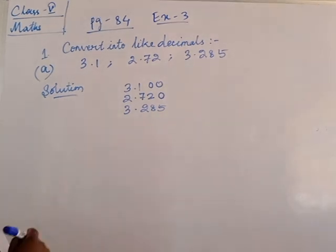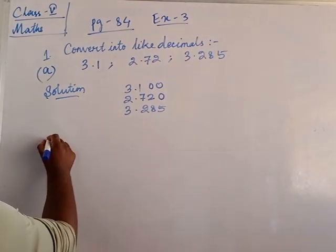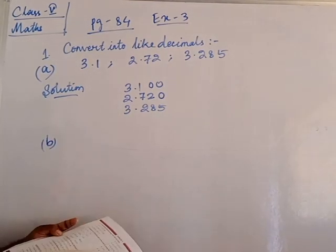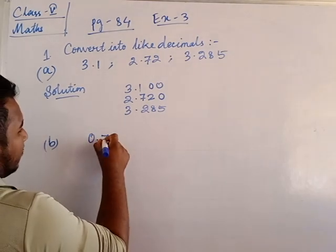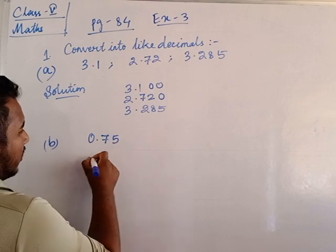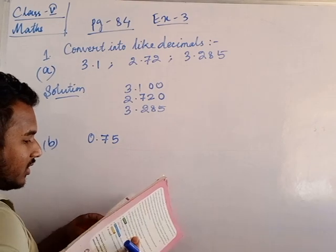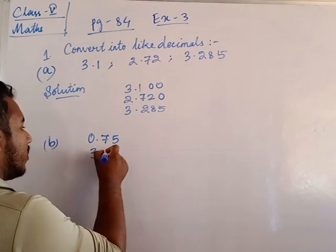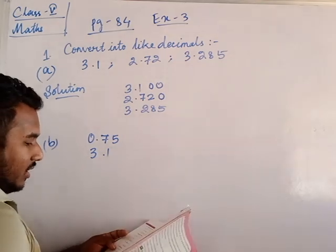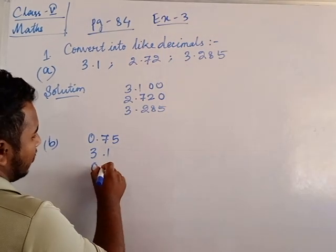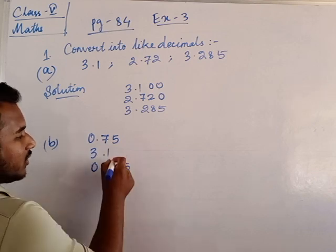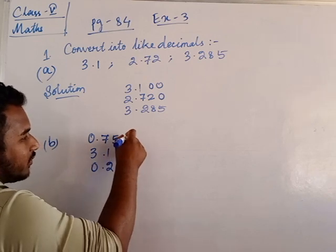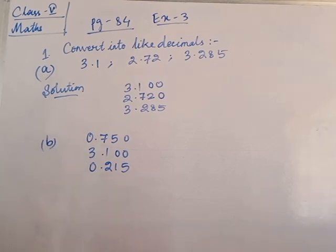Next, B number: 0.75, then 3.1, then 0.215. Here three digits, here one digit, here two digits. So here we will put two zeros, here we will put one zero — like this. Very simple, only putting zeros. These are your like decimals.